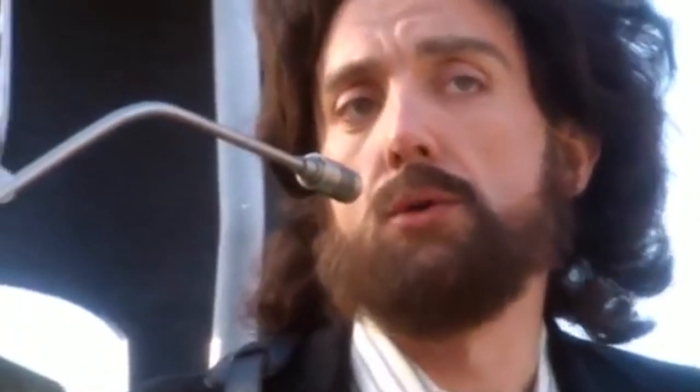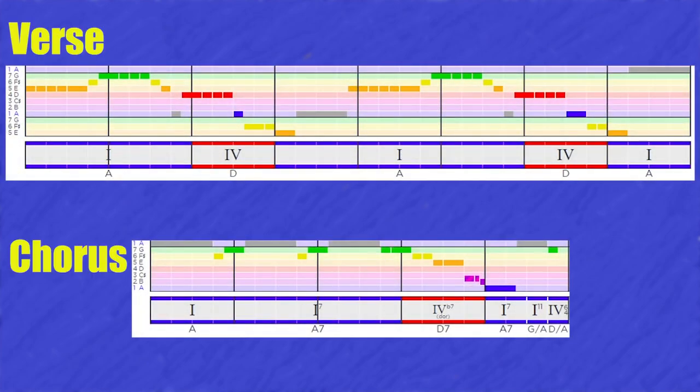Let's have a look at Get Back. This song uses the same chord progression for the verse and the chorus. They use contrast in the melody to make the verses and choruses sound different from each other.